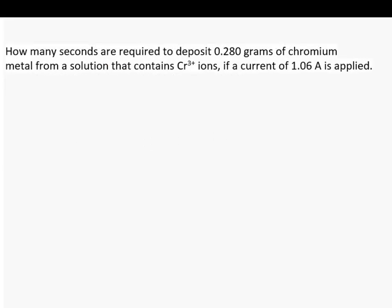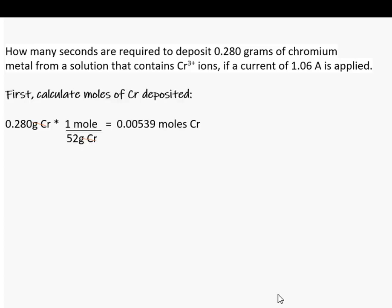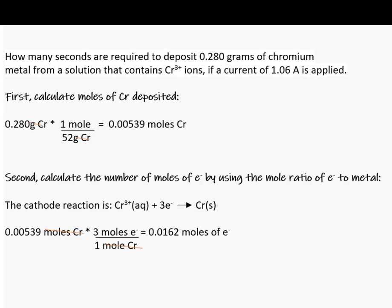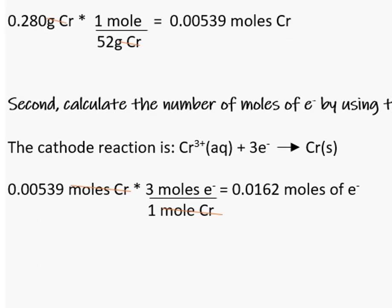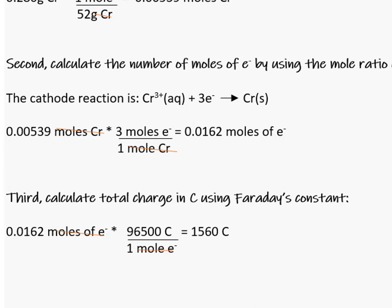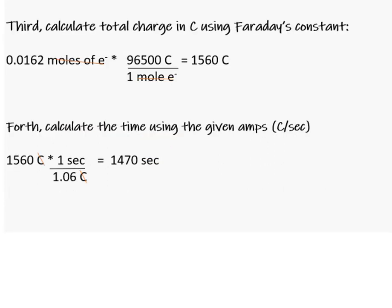How many seconds are required to deposit 0.28 grams of chromium from a solution containing chromium 3+ ions using a current of 1.06 amps? First, convert the grams of chromium by dividing by the molar mass of chromium. Second, calculate the number of moles of electrons using the mole ratio — the reduction half-reaction for chromium 3+ to chromium solid requires 3 electrons for every 1 mole of chromium ion. Using that ratio, we calculate 0.0162 moles of electrons. Then calculate the total charge in coulombs using Faraday's constant. Finally, calculate the time in seconds by dividing the coulombs by the value of the current.